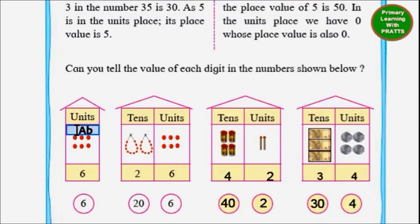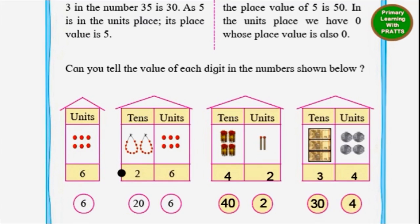Let's complete the exercises in the textbook. The first one: we have to count how many there are. We can see there are 6 beads, so we write 6. The place value is also 6, because it is under units — 6 into 1 equals 6. Next: there are 2 necklaces, which is 2 tens — 2 into 10 equals 20 — and 6 beads, 6 into 1 equals 6.